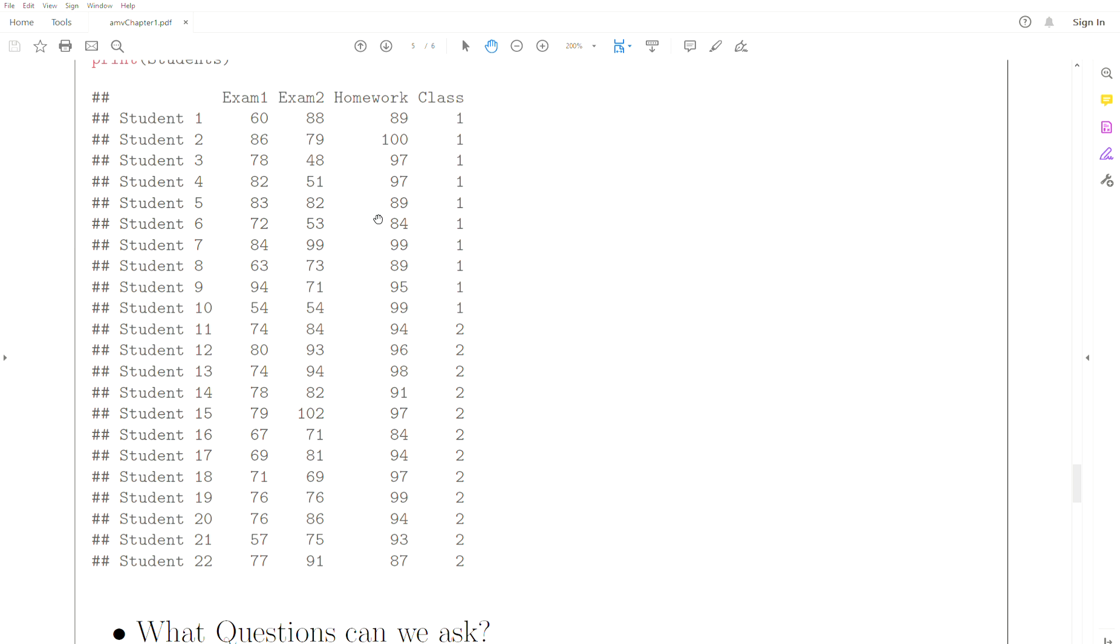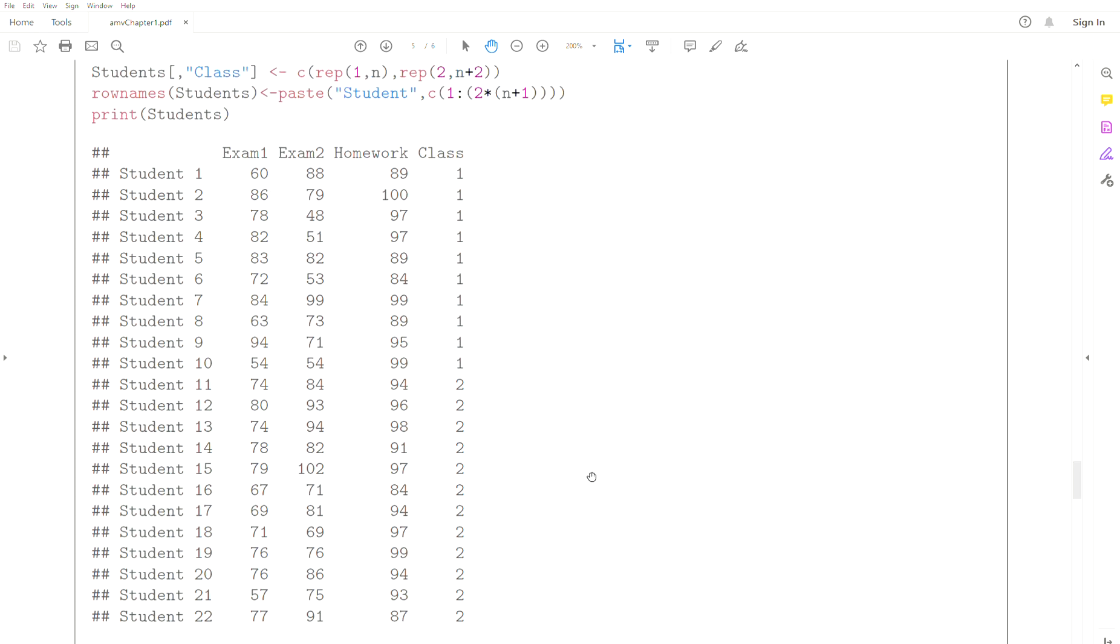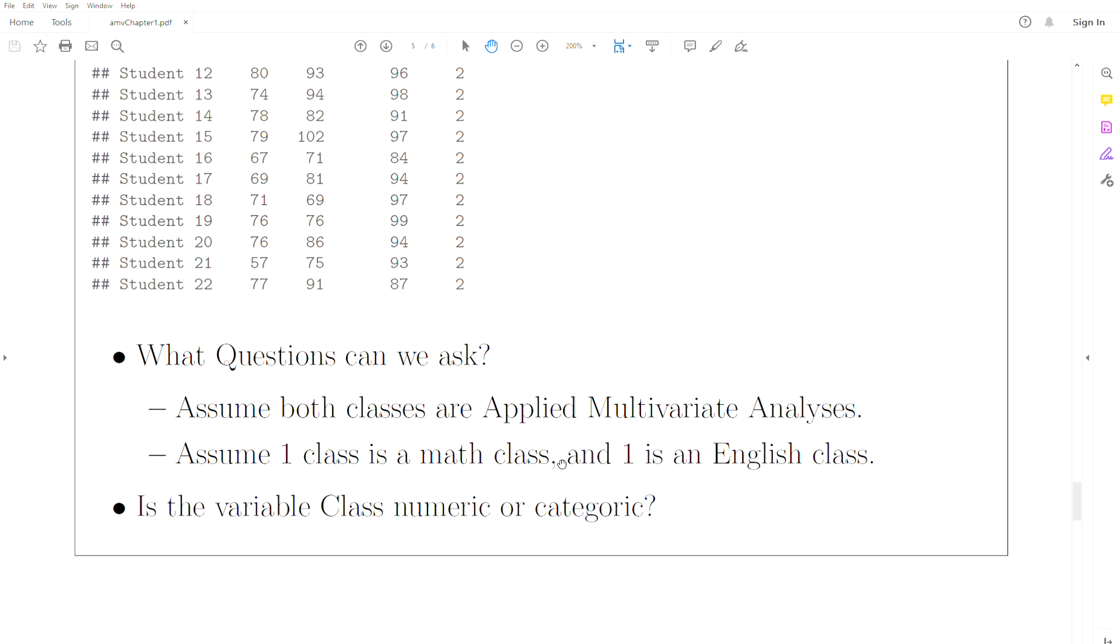But then we can say how do the mean vectors or a linear combination of these correlate with these variables? How well do the English variables correlate with the math variables?